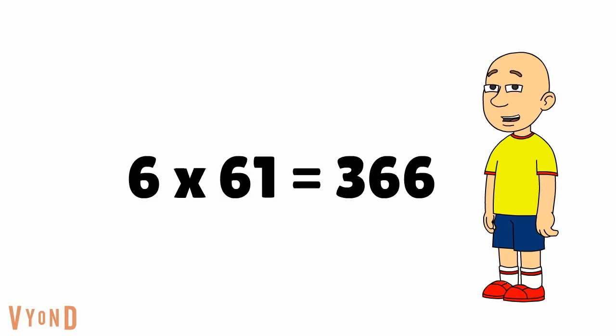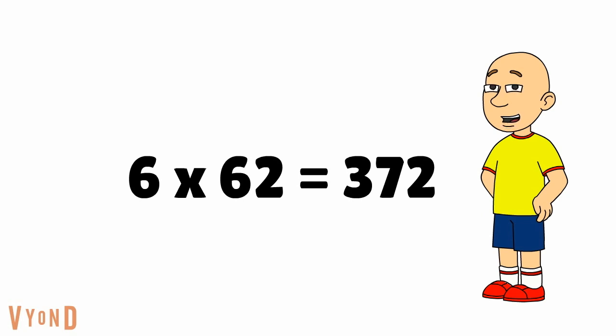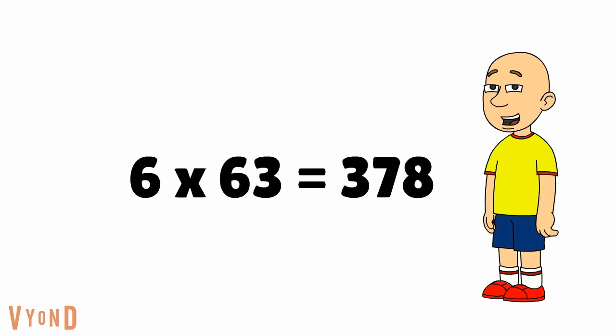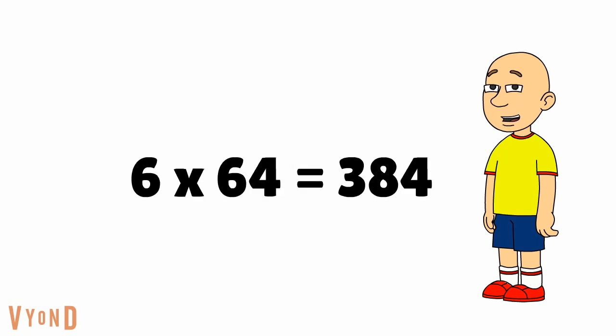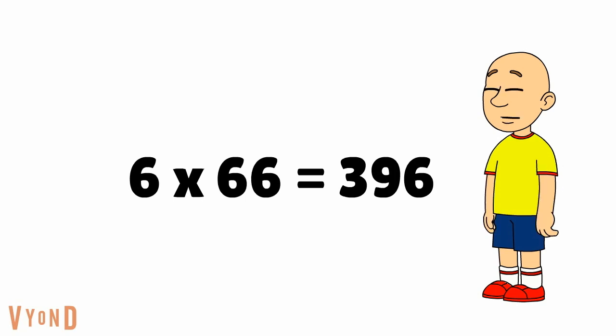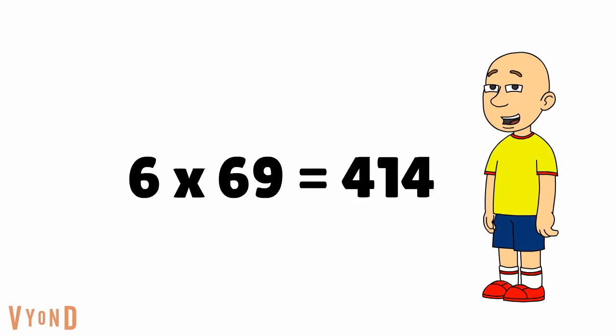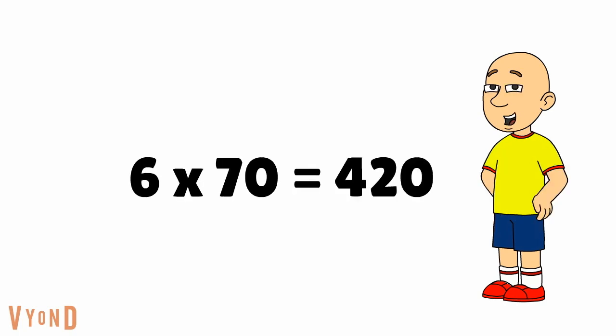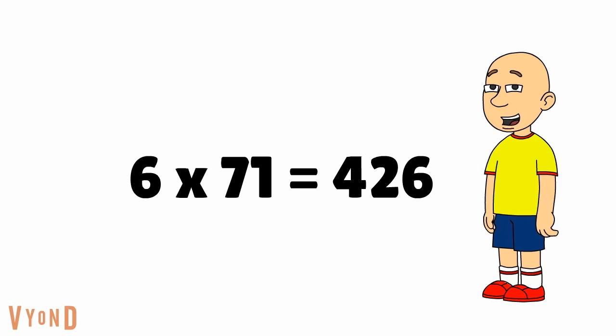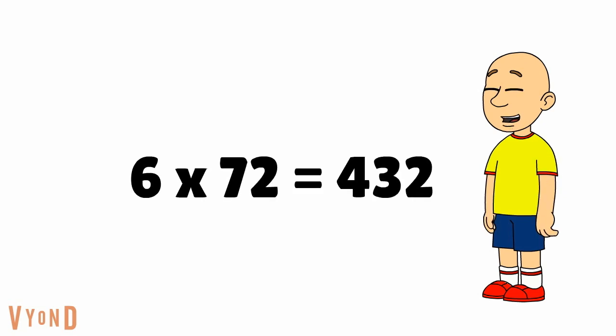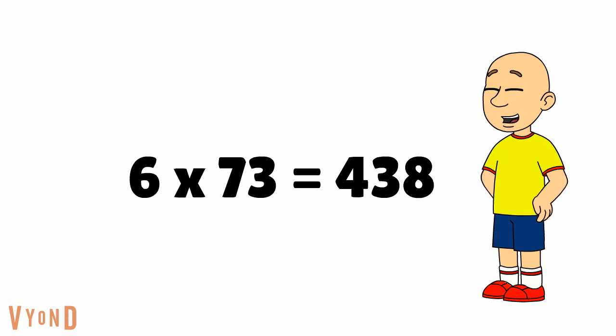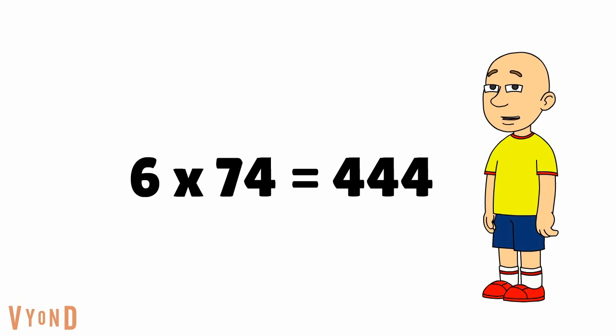6 times 61 equals 366. 6 times 62 equals 372. 6 times 63 equals 378. 6 times 64 equals 384. 6 times 65 equals 390. 6 times 66 equals 396. 6 times 67 equals 402. 6 times 68 equals 408. 6 times 69 equals 414. 6 times 70 equals 420. 6 times 71 equals 426. 6 times 72 equals 432. 6 times 73 equals 438. 6 times 74 equals 444. 6 times 75 equals 450.